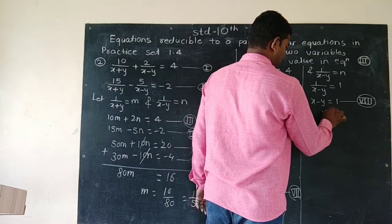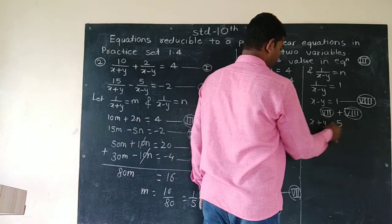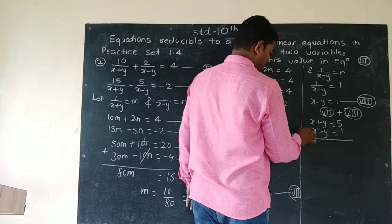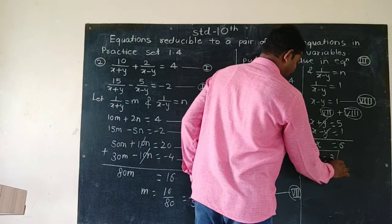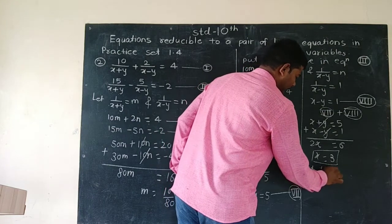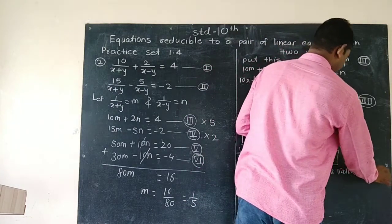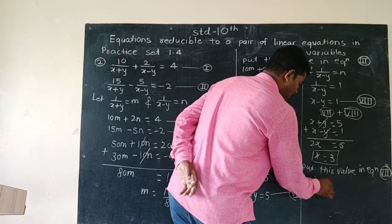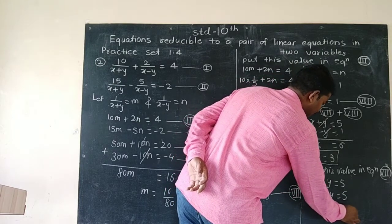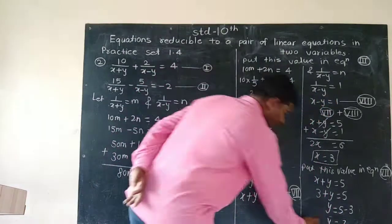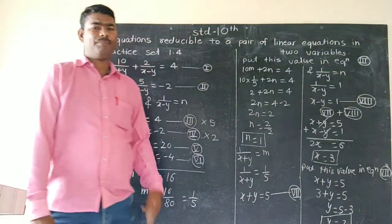Adding equations 7 and 8: x plus y equals 5 and x minus y equals 1, so 2x equals 6, therefore x equals 3. Putting x equals 3 into equation 7: 3 plus y equals 5, so y equals 5 minus 3, which gives y equals 2. The solution is x equals 3 and y equals 2.